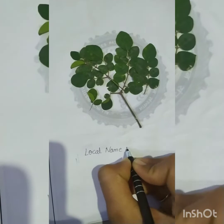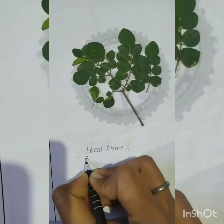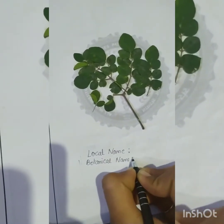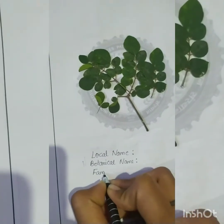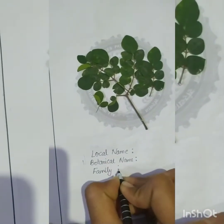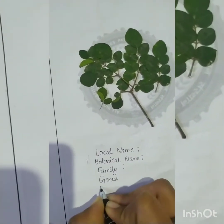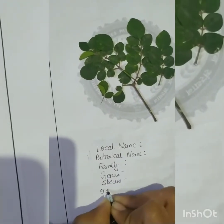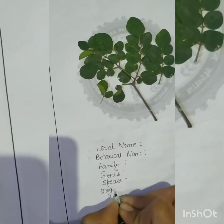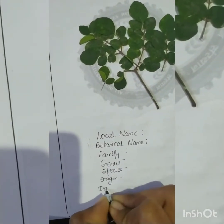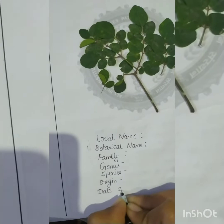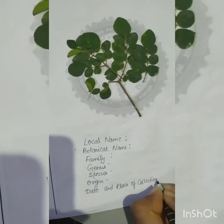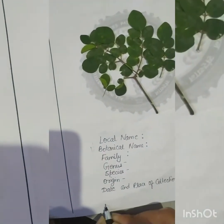Then write the details required for that plant: local name, botanical name, and then family. Write the genus, species, and then origin. Also mention the date and place of collection of the plant.